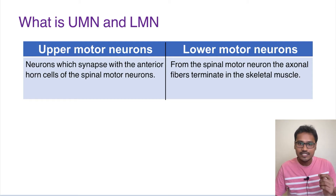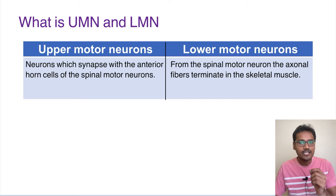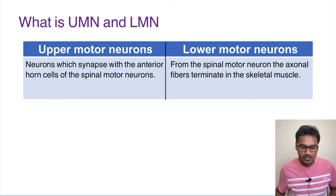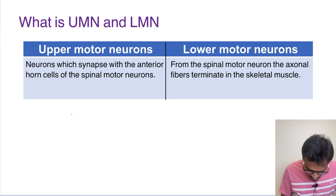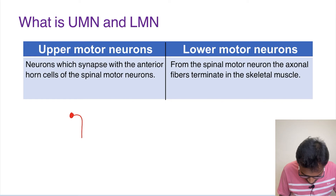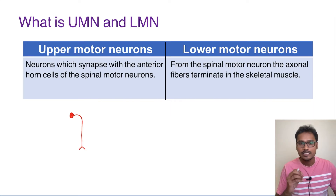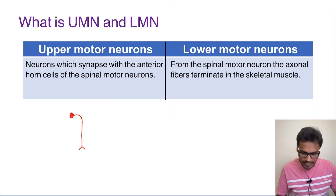Any neuron which is coming down from the central nervous system — that is from the brain and the spinal cord — and it is synapsing with the anterior horn cells of the spinal motor neurons, they are called as upper motor neurons. For example, all the neuron fibers which are coming from the higher regions of the brain and the spinal cord will go down and end their synapse in the spinal cord, especially in the anterior horn cells.